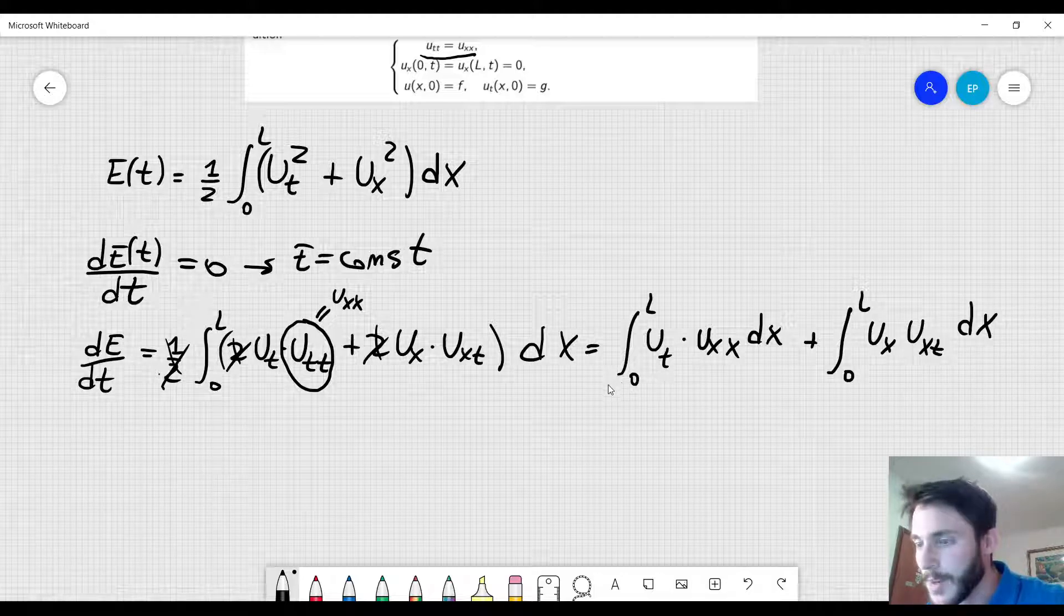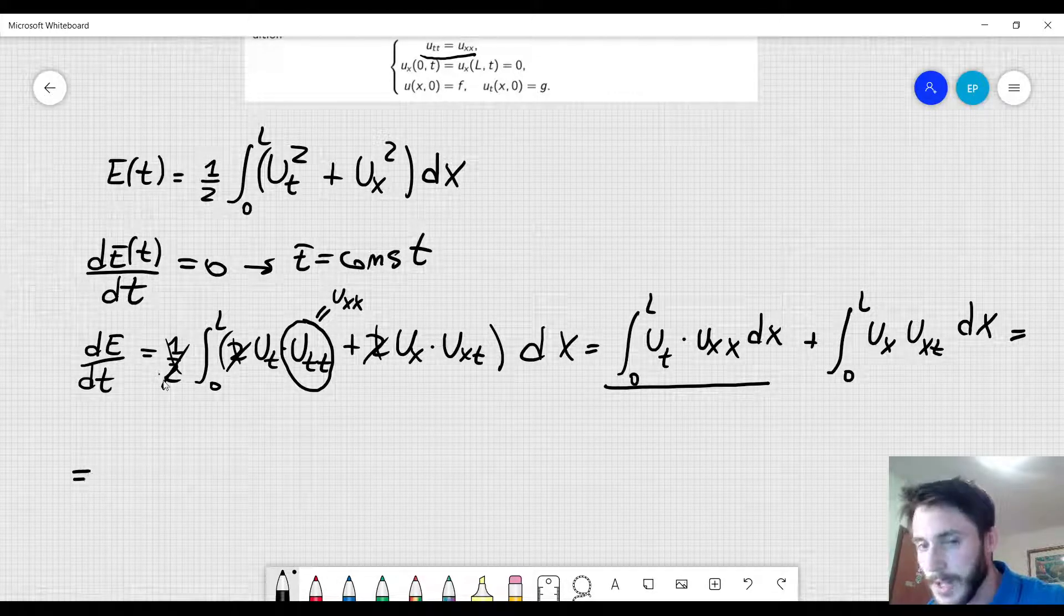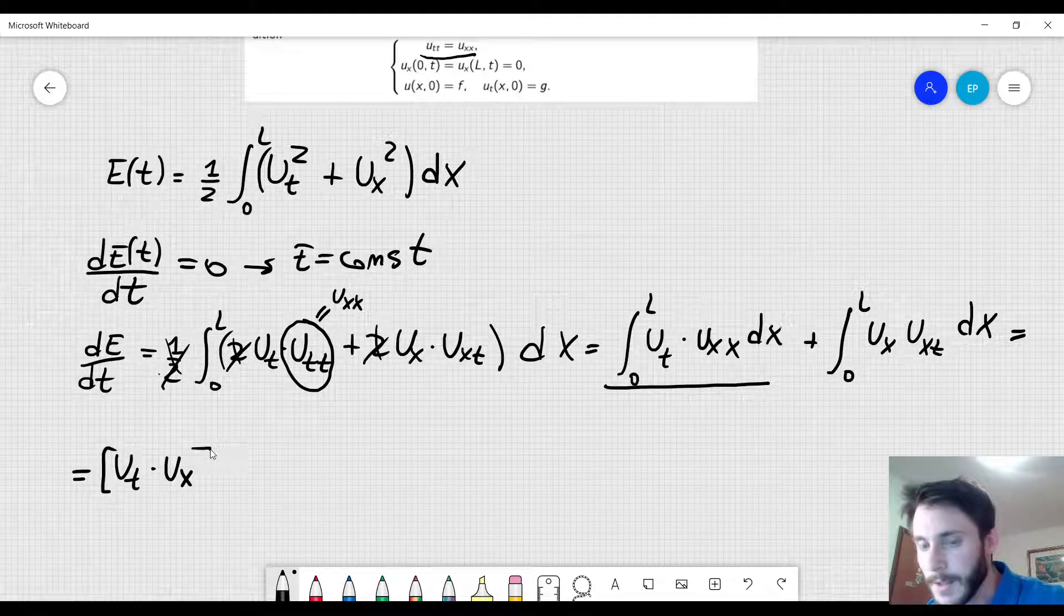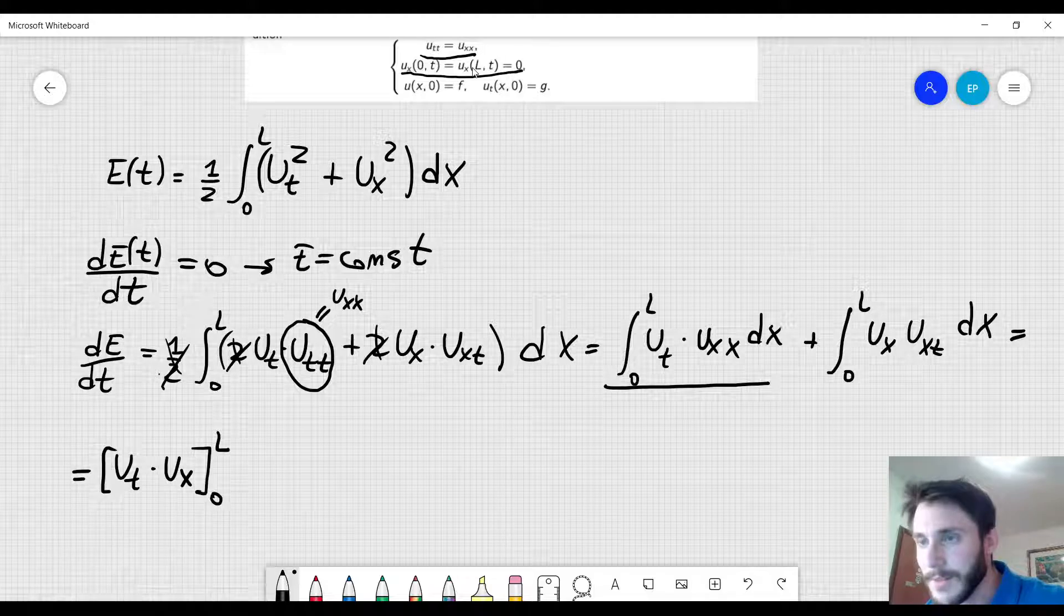And now I will rewrite this integral here by integrating by parts just once. So when I integrate by parts I will get u_t times u_x evaluated at 0 and L and since we have Neumann boundary conditions here, the derivative of u with respect to x calculated at L and also calculated at 0 is equal to 0.